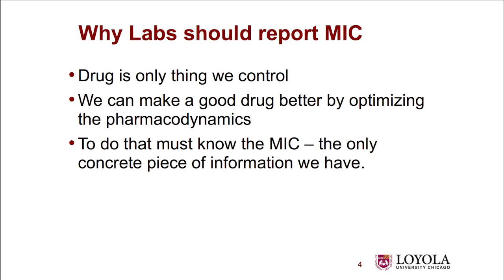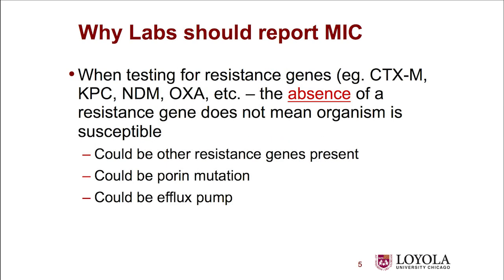There's a lot of interest in PCR tests for resistance genes, and you see a lot of them at this meeting. But when you test for a resistance gene, although that's very helpful in terms of infection control and might even be helpful in terms of modifying your treatment, if a gene is absent, it doesn't mean that the organism is susceptible. There could be other resistance genes present — there are 1,800 beta-lactamase genes now. So you're testing for five or six? That's nothing.